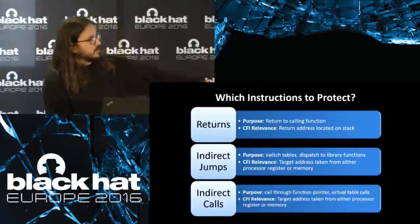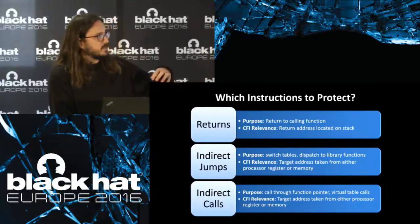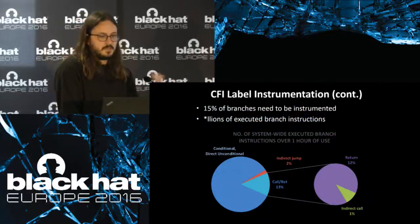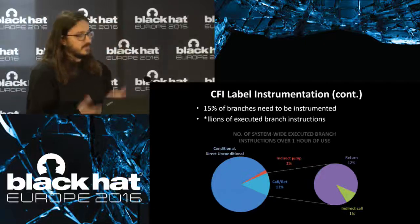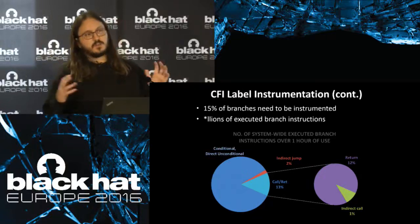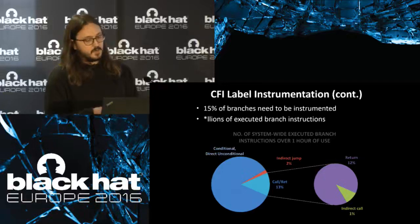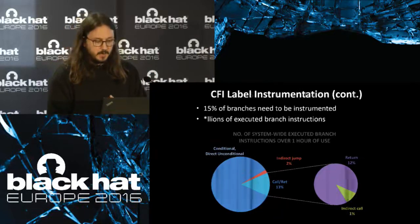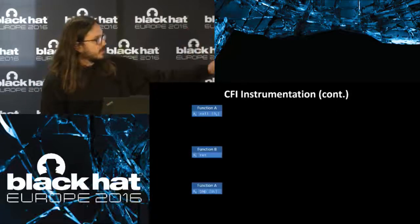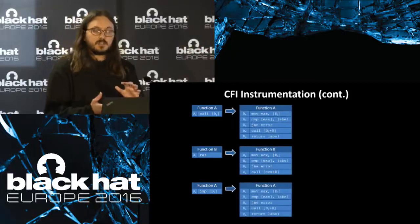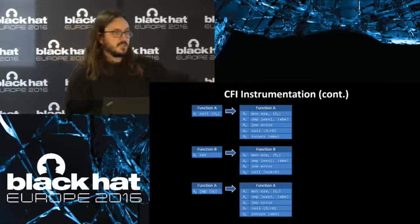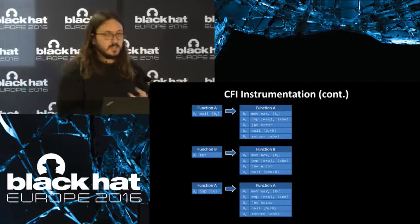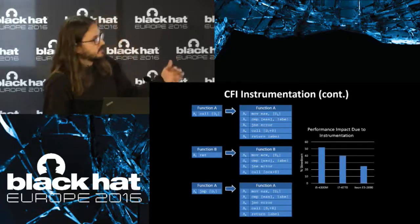We are only protecting instructions that dereference memory indirectly. Direct code pointers are not a concern because code pages are not writable. About 15% of branches are indirect in a general execution trace — the large majority being returns and indirect calls, plus some jumps — amounting to billions of executed branch instructions. For static instrumentation at a function call, return, or jump, we instrument the code to do a CFI check by dereferencing the label from the target destination and doing a comparison prior to transferring control, which incurs significant overhead in instruction latency and instruction size.